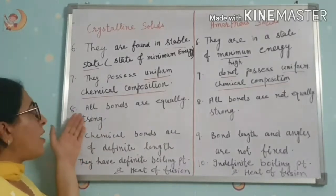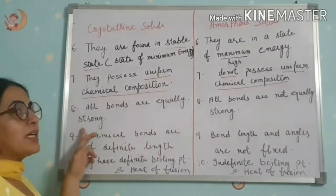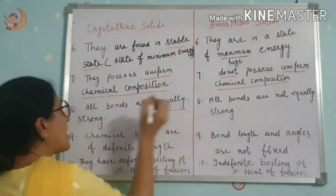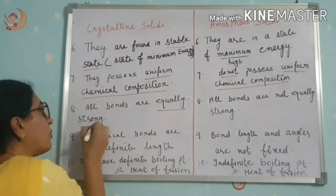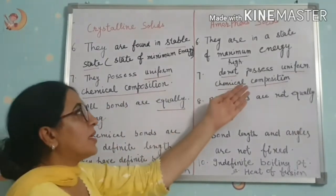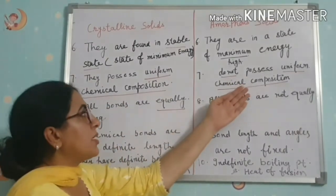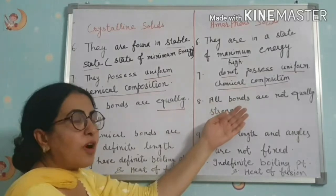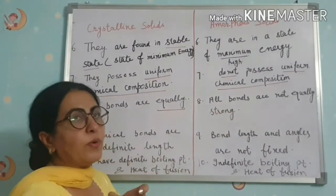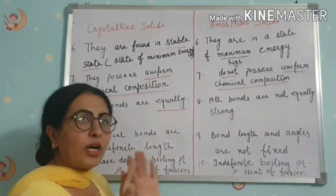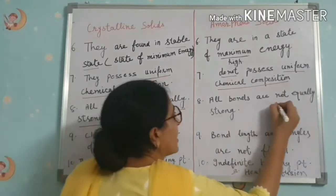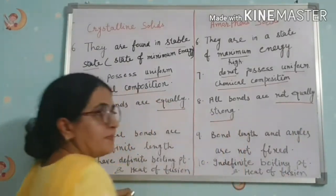Because the chemical composition of crystalline solids is uniform, all bonds are equally strong. In amorphous solids, chemical composition is not uniform, so all bonds are not equally strong. This is the eighth point.